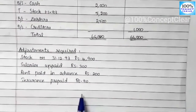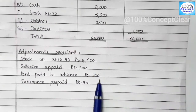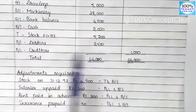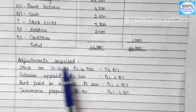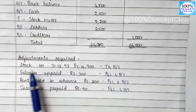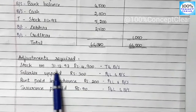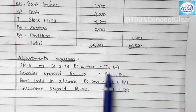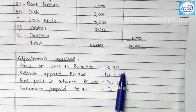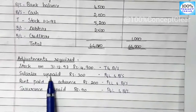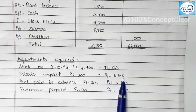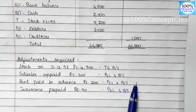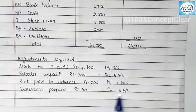Next we have adjustments. These items will appear in two accounts each. The first adjustment item is Stock dated 31/12/93 — this is the closing date, so it is closing stock, which appears in the Trading account and Balance Sheet. Next is Salaries unpaid — P&L and Balance Sheet. Next is Rent paid in advance — P&L and Balance Sheet. Next is Insurance prepaid — P&L and Balance Sheet.